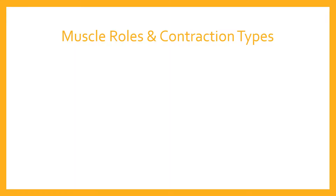The first muscle role we want to talk about is the agonist, also sometimes referred to as the prime mover. That name gives you a slightly better understanding of what the role of the agonist is. Essentially, in any movement, whichever muscle is predominantly responsible for moving that joint and creating that movement, we refer to as the agonist.